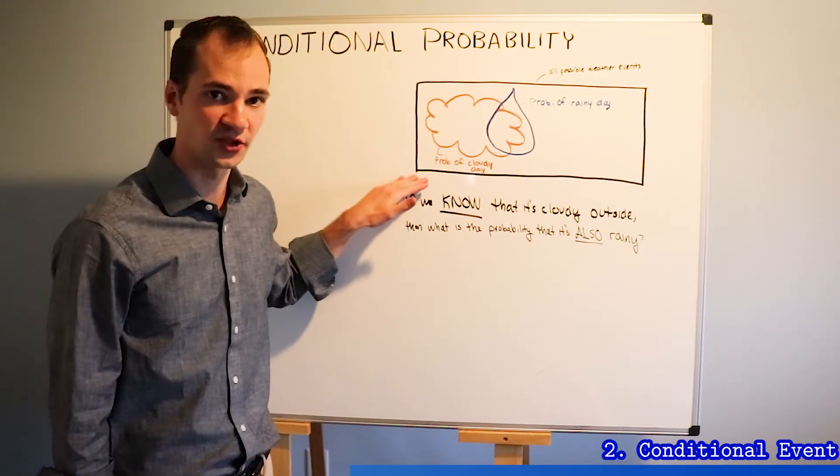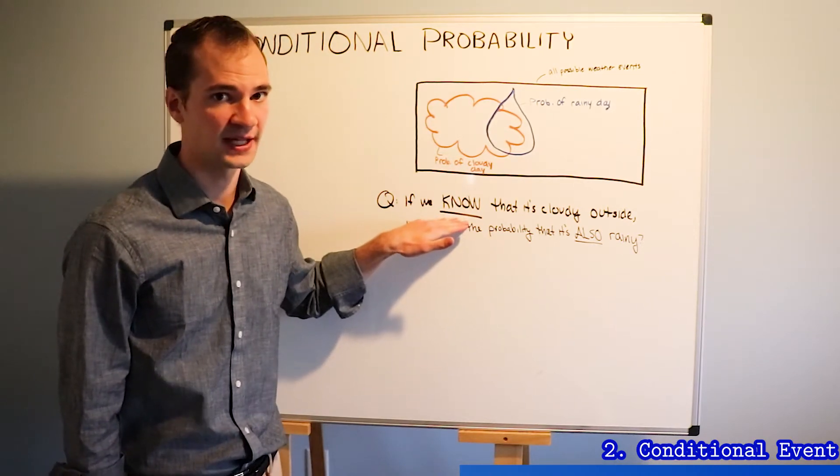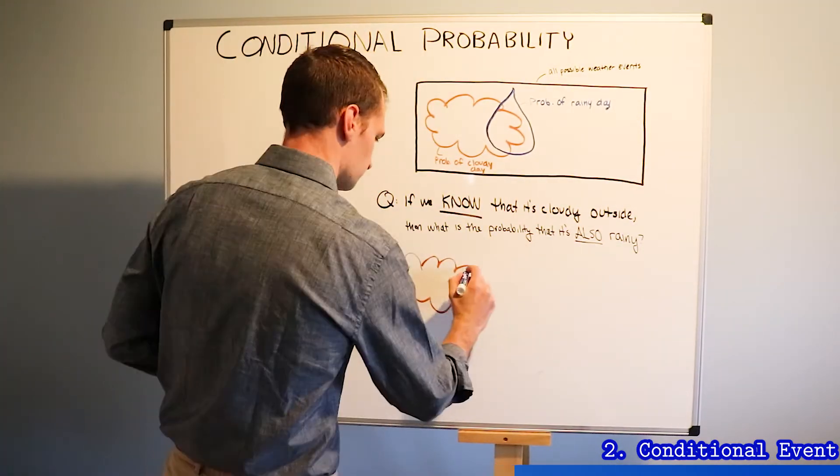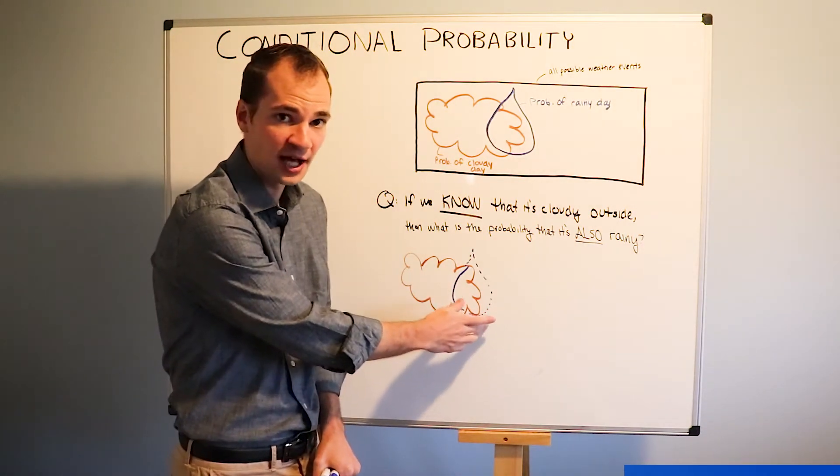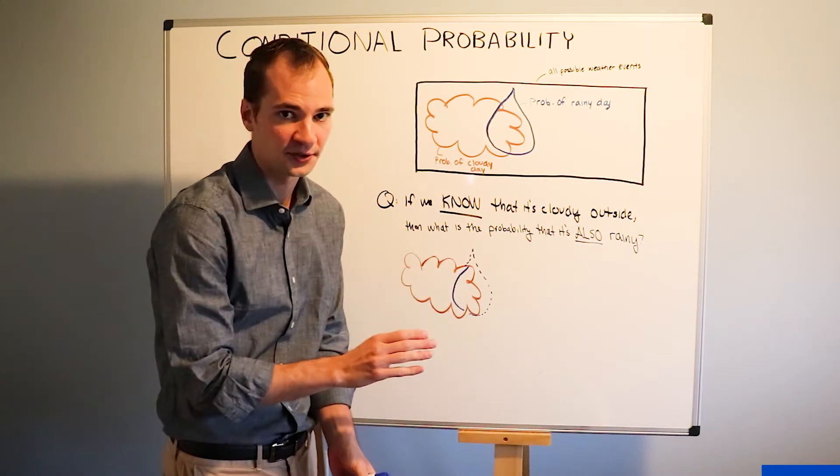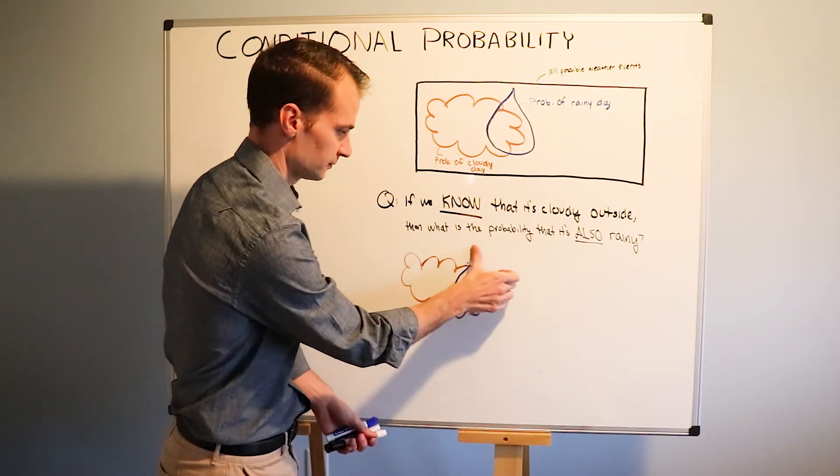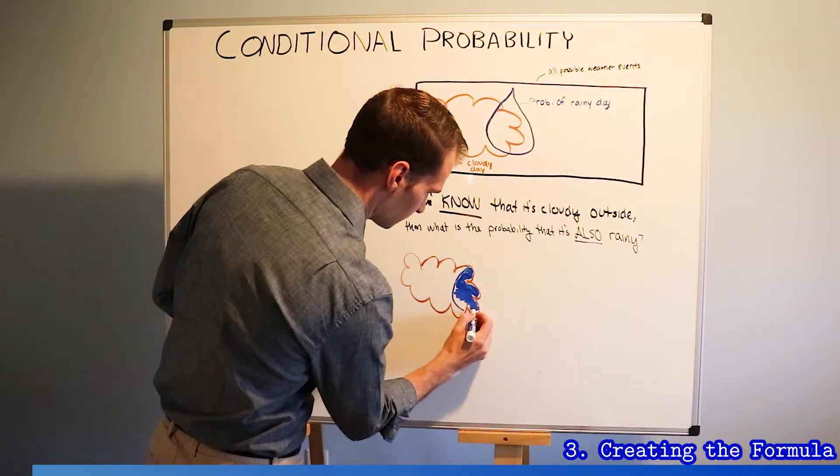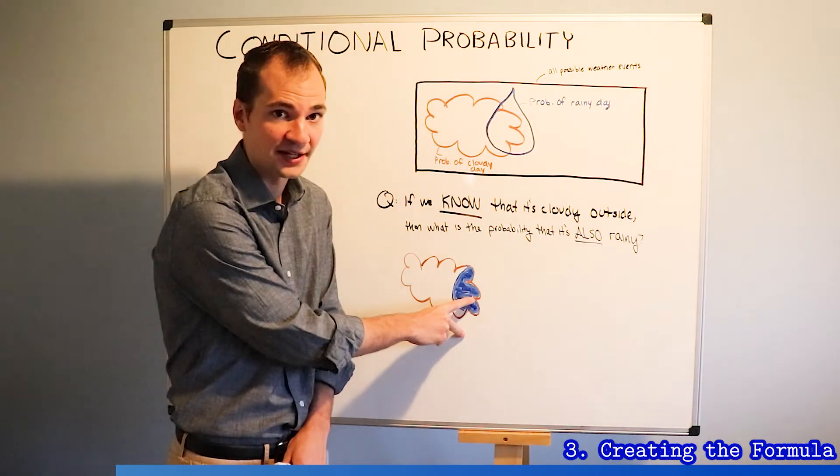No longer are we looking at the entire sample space because we are given information that it's cloudy outside. Any portion of the raindrop that falls outside of the cloud becomes irrelevant because this area represents rainy and not cloudy. But we're given information that it's cloudy. We know that we're going to be dealing with the overlap because this represents the probability that it's raining and it's cloudy.